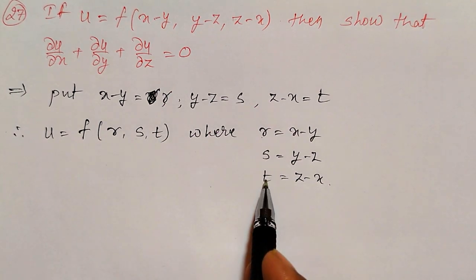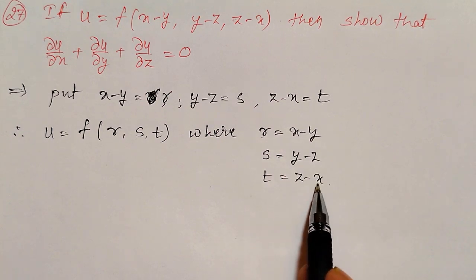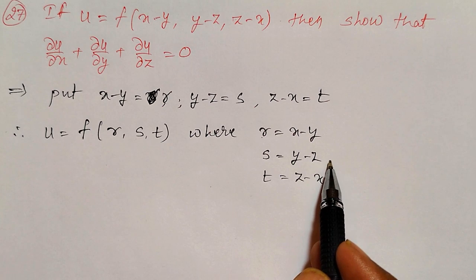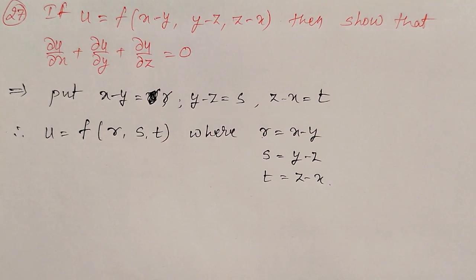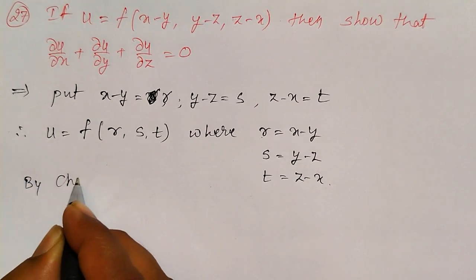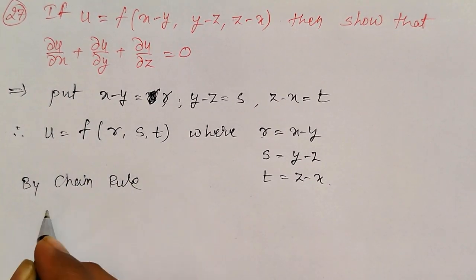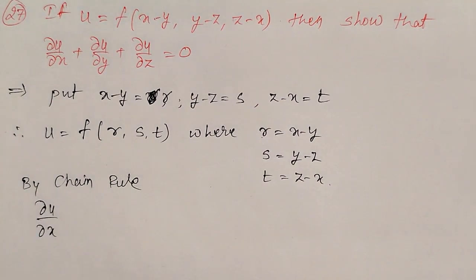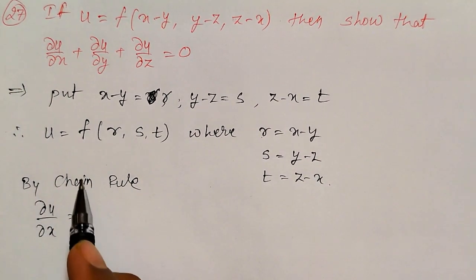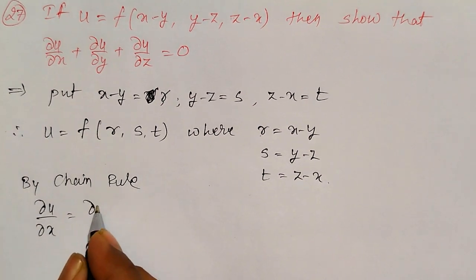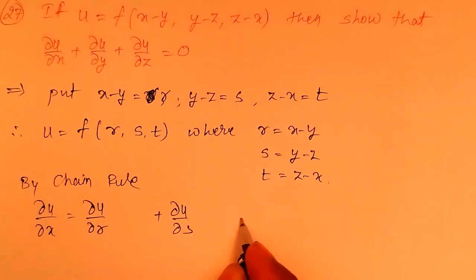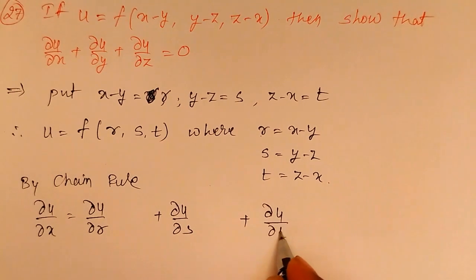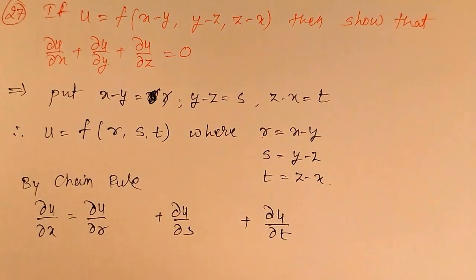You can observe that u is a function of r, s, t, and r, s, t are functions of x, y, z. Note that r has no z term, s has no x term, and t has no y term. By using the chain rule for composite functions, ∂u/∂x can be written as (∂u/∂r)(∂r/∂x) + (∂u/∂s)(∂s/∂x) + (∂u/∂t)(∂t/∂x).